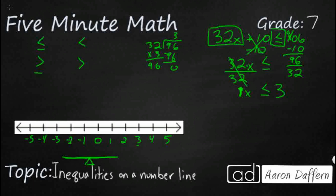Here is my 3 on the number line. Now, how do we represent that? This is where it becomes very important to look at the inequality. I'm going to put a circle right there at 3. If we have a less than or greater than symbol, we use an open circle — that means we're not including the number itself. But since we have a less than or equal to, we are going to bubble that in — a closed circle. Same with greater than or equal to. If I didn't have that little equal sign, it would be an open circle.